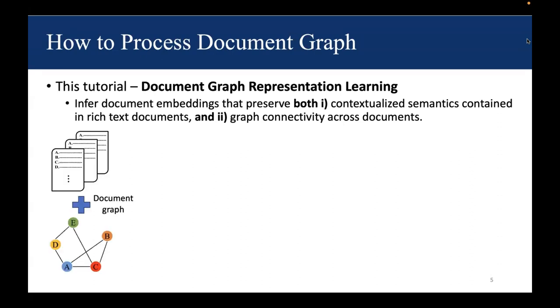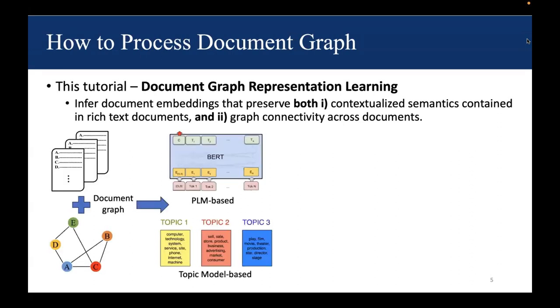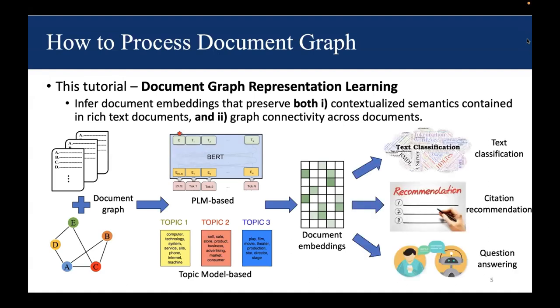Given document graph as input, we aim to design existing models such as pre-trained language models or topic models. As the output, we obtain document embeddings, and we hope they can fulfill different tasks such as text classification, citation recommendation, and question answering.